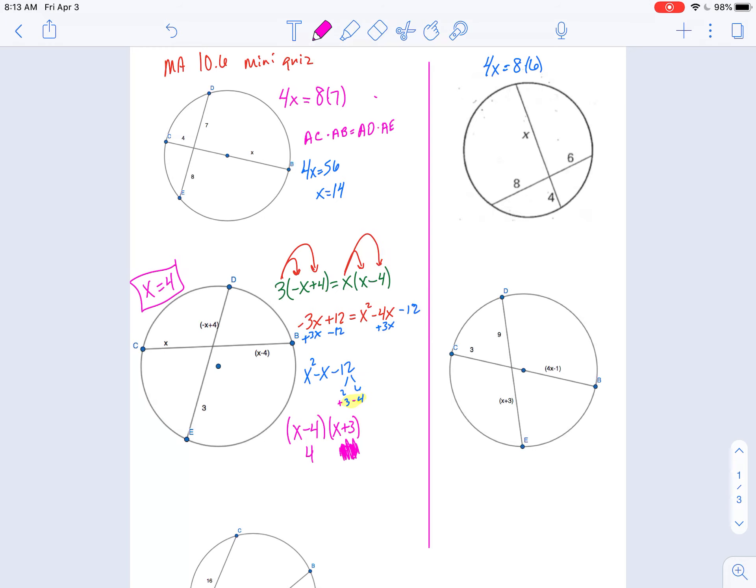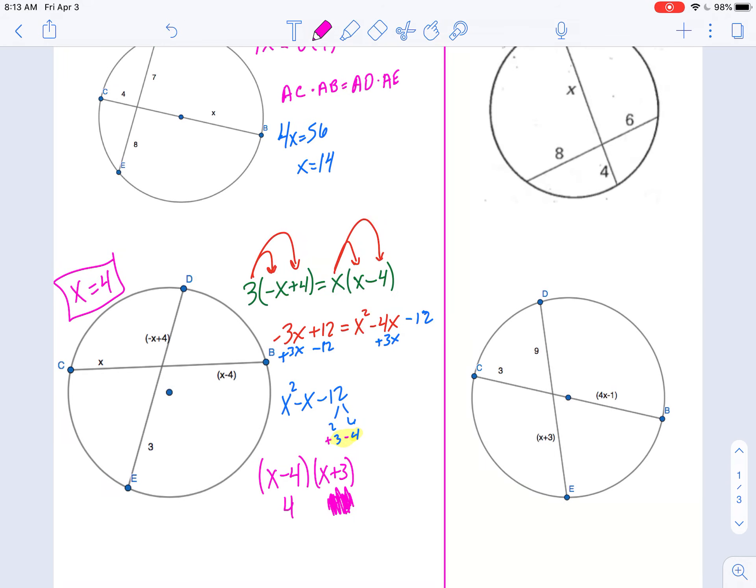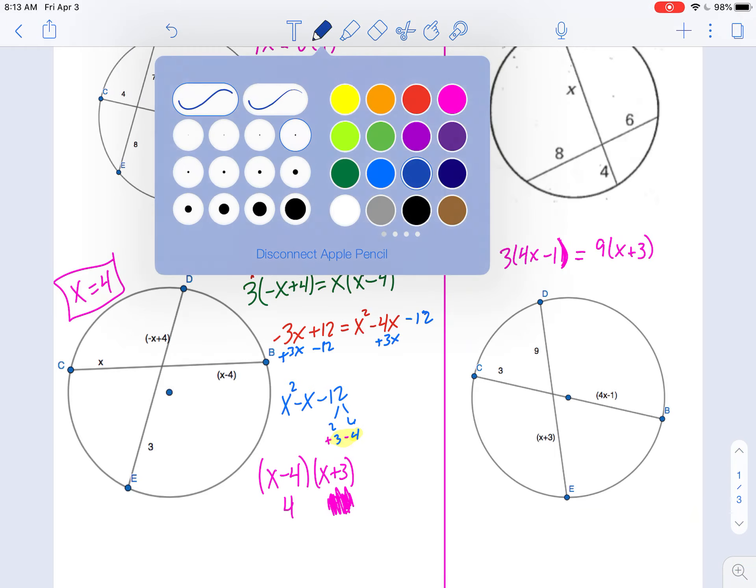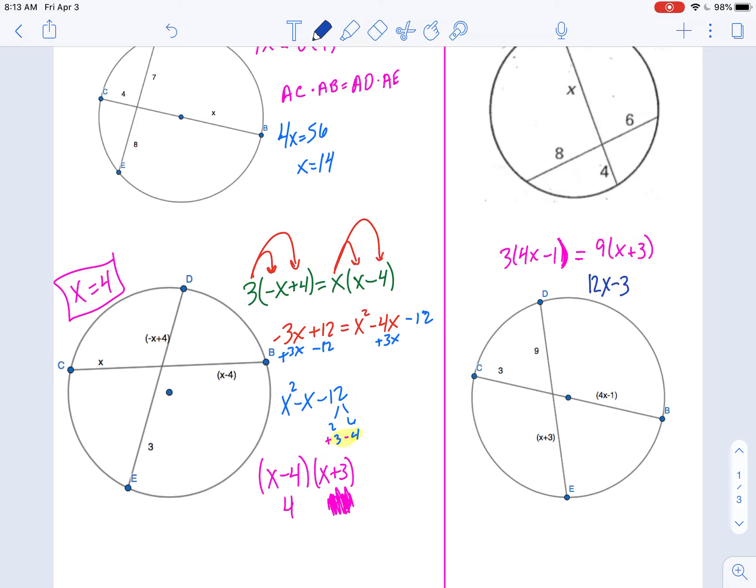And we'll do one more like this, and then we're going to look at the other problem type. Same thing here. Let me kind of separate these a bit. 3 times 4x minus 1 equals 9 times x plus 3.